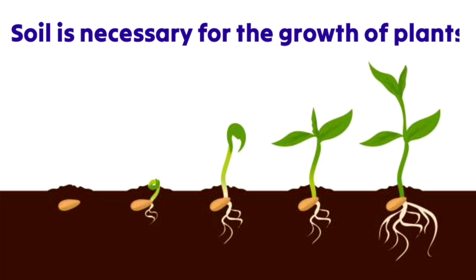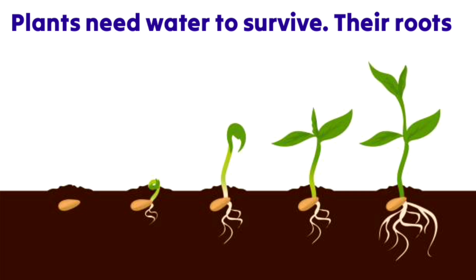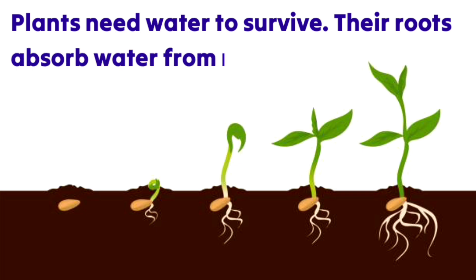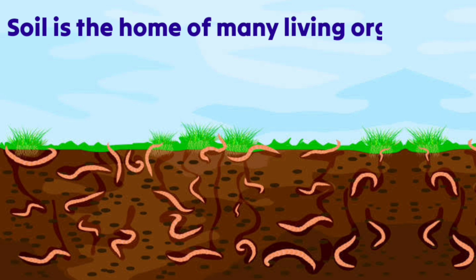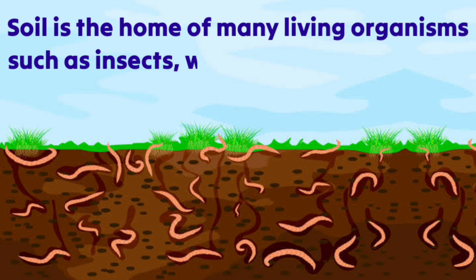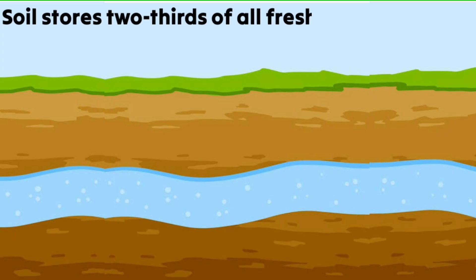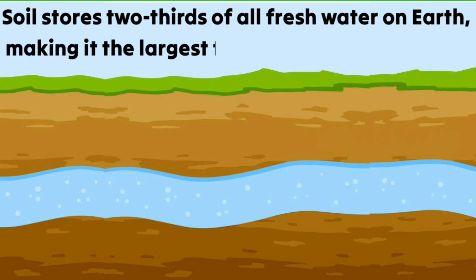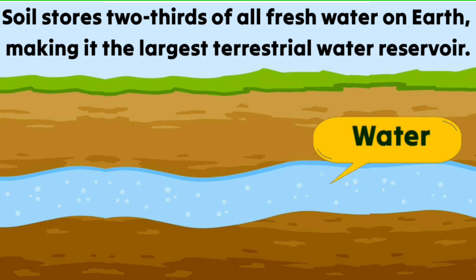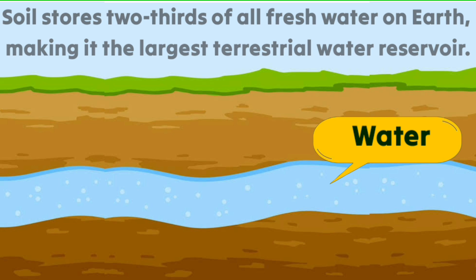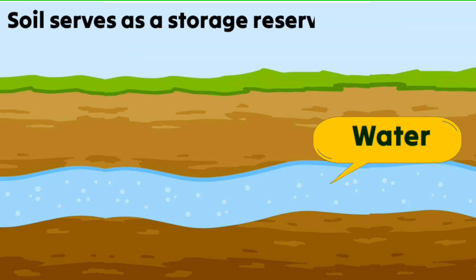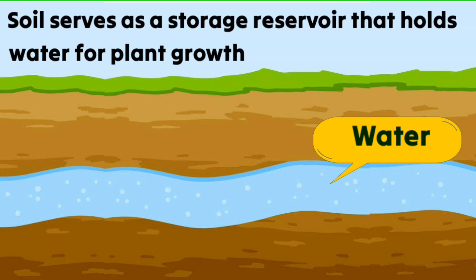What are the various uses of soil? Soil is necessary for the growth of plants. Plants need water to survive and their roots absorb water from moist soil. Soil is also the home of many living organisms such as insects, worms, bacteria, and more.